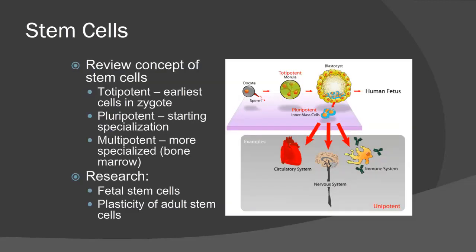Stem cells are undifferentiated cells before they become specialized, with unmodified and unprogrammed DNA. Totipotent, pluripotent, and multipotent are stages at which stem cells can become differentiated cells, classified as unipotent. The further cells head toward specialization, the less viable they are to become any other type. There is significant research into using stem cells to regrow tissues we cannot regenerate, such as neurons. As of 2017, emerging studies were looking at stem cells to regrow neurons in stroke victims.